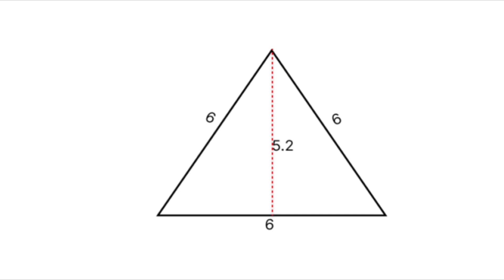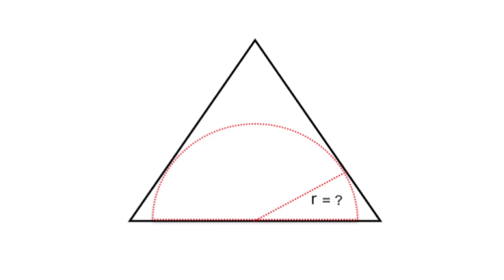All right. Now that we've got the height, we're even closer to the finish line. But remember, our real goal is to find the radius of that semicircle. So the next question is, where does the radius show up in this triangle?